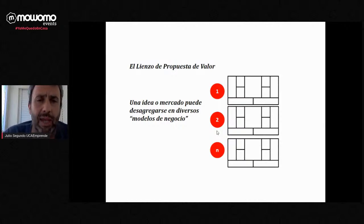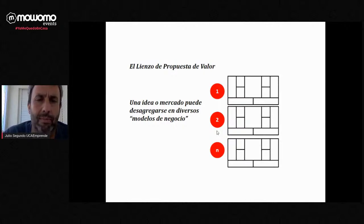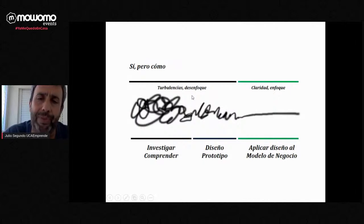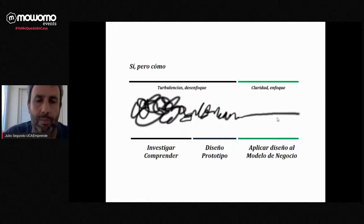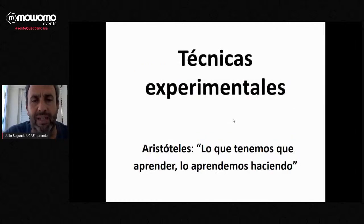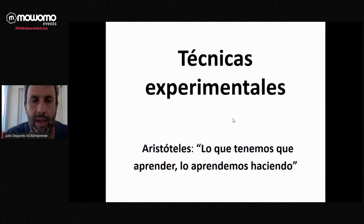Podemos hacer múltiples modelos de negocio. Aquí está el secreto de por qué un proyecto funciona y otro no: en cómo has desarrollado el modelo de negocio. Se trata de que esta maraña de ideas que tenemos se transformen en un modelo de negocio claro, enfocado y centrado. Esto era básicamente la introducción — he dedicado casi 15 minutos largos, así que voy a tener que correr con las técnicas experimentales.